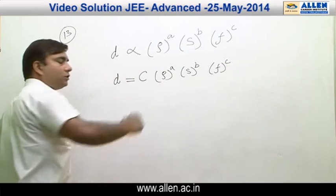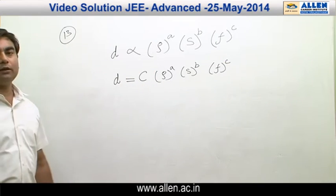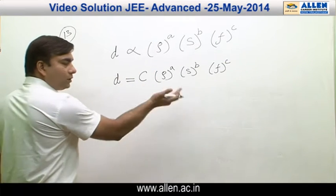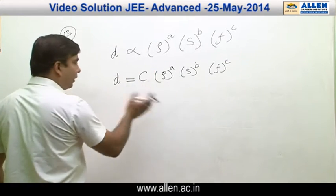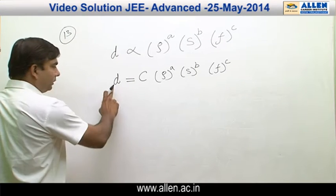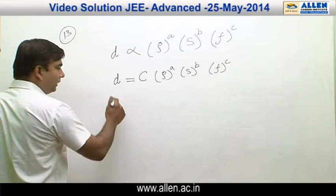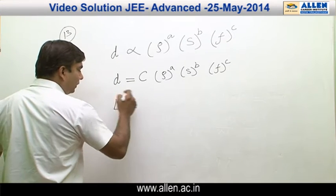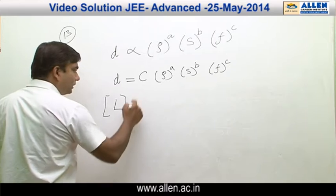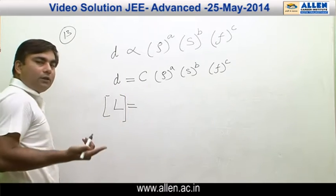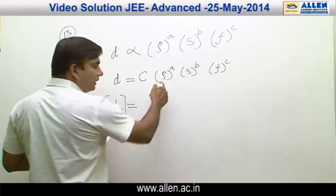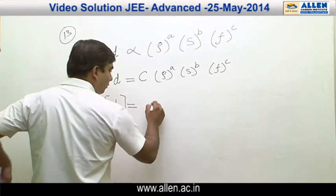Now if this equation is logically correct, it should be dimensionally true as well. Hence we can equate dimensions on both the sides. Writing dimensions of all the quantities: dimension of d is L. I am writing dimensions on both the sides. C is a dimensionless constant. Density is like mass per unit volume, so M L⁻³ to the power a.